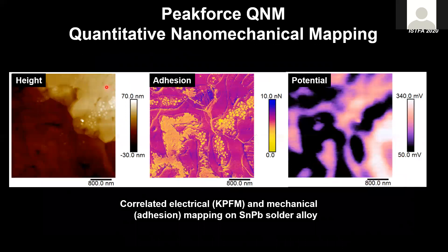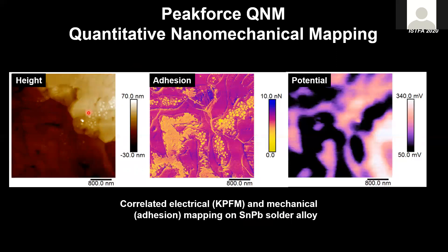A second mechanical measurement example combines mechanical and electrical measurements. Here we measure the surface potential or work function distribution — about two colors corresponding to the tin-lead and silver alloy with their two work functions — and simultaneously measure adhesion between the AFM tip and the sample, providing incremental information complementary to the surface potential.